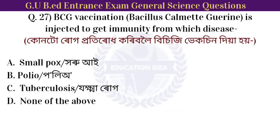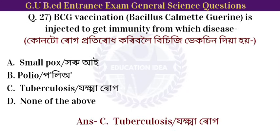Next question: BCG vaccination is injected to get immunity from which disease? BCG stands for Bacillus Calmette-Guérin. Option: tuberculosis. BCG vaccine is given to get immunity from tuberculosis.